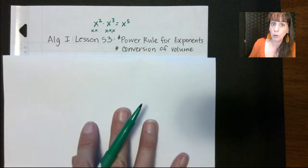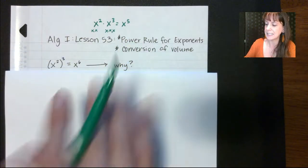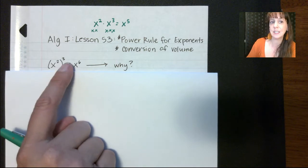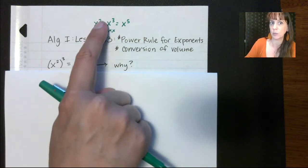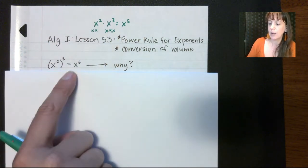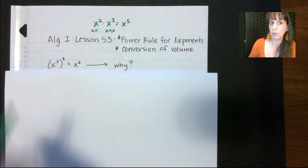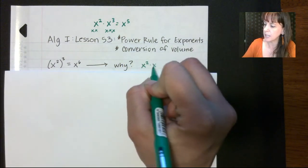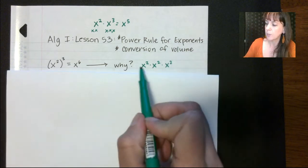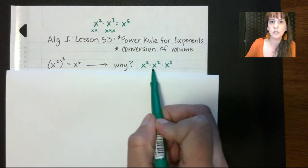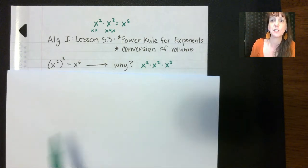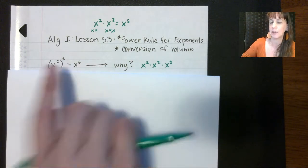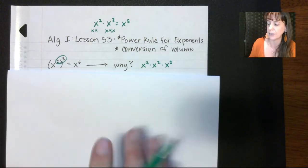Today we're going to talk about the power rule, which is slightly different. It looks like this: x squared to the third power is x to the sixth. So in this case we're multiplying, whereas with the product rule we are adding. Why? Because we're doing x squared three times — x squared times x squared times x squared. We have two x's, two more x's, and two more x's, giving us a total of six x's. That is why you end up multiplying the two exponents together.